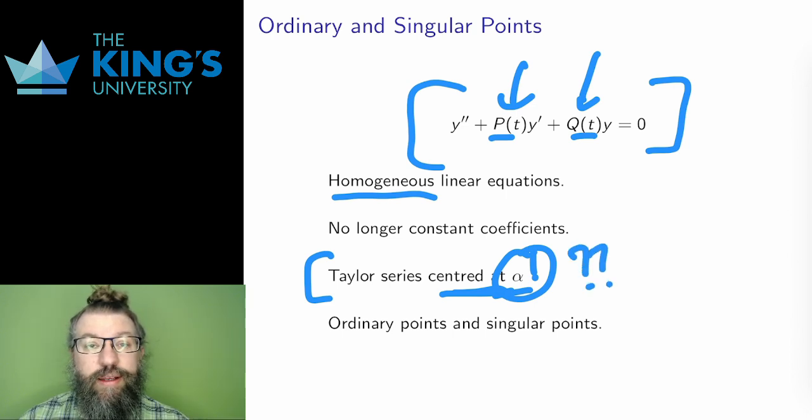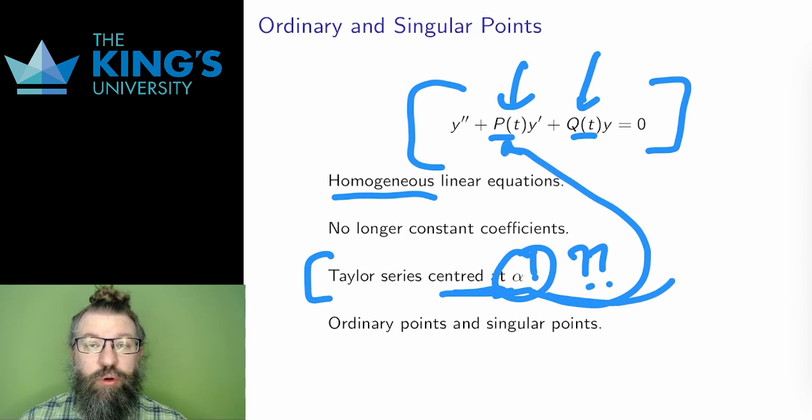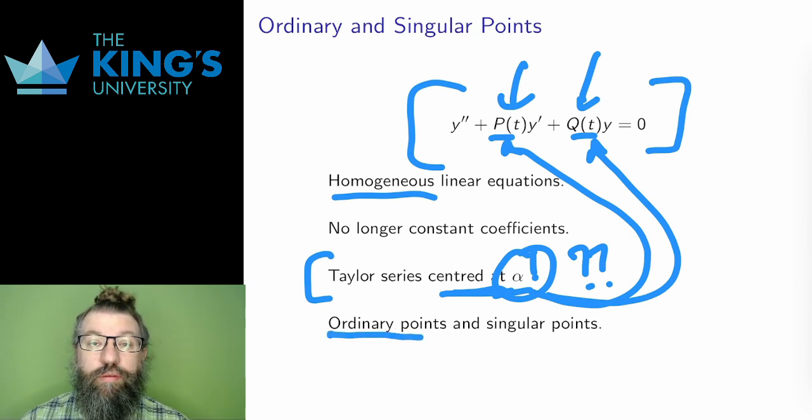Well, I can consider if the functions p and q are nice functions at that point. If p and q are both analytic at alpha, that is, infinitely differentiable at alpha, then alpha is called an ordinary point for the DE.